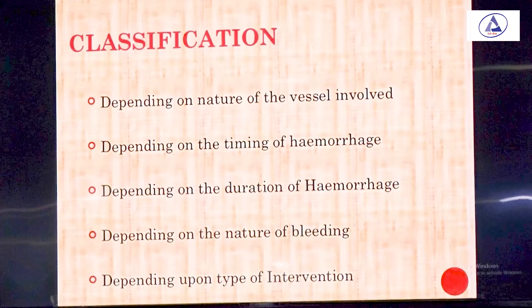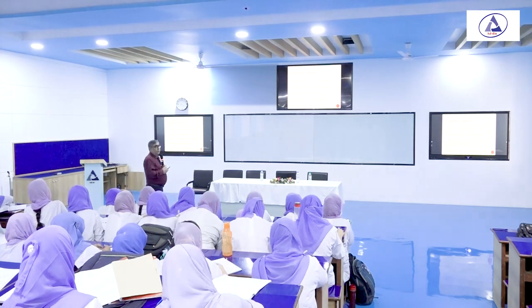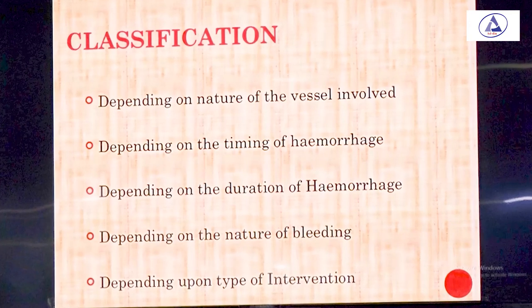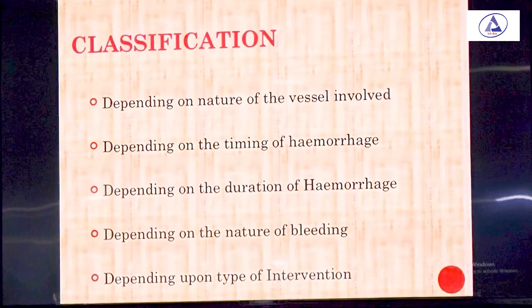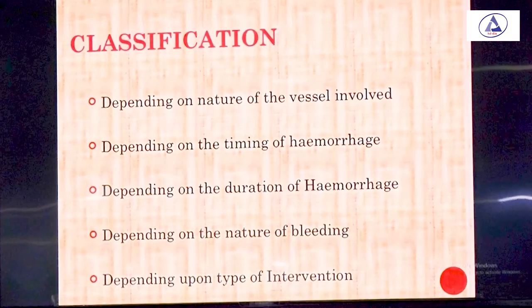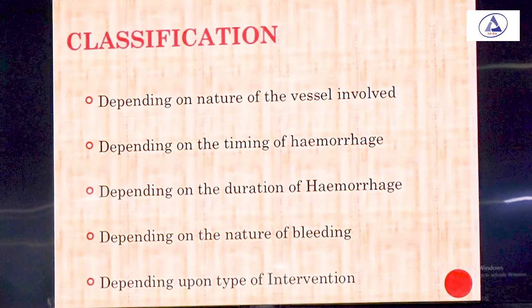Now regarding the classification of hemorrhage, write down these things. I have done a classification of different dimensions. Number one is depending on the nature of the vessel involved. Next, depending on the timing of hemorrhage — that is, when the hemorrhage occurs. Another classification is based on the duration of hemorrhage — how long it is continuing. Next is depending on the nature of bleeding. Lastly, depending upon the type of intervention.